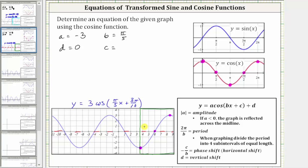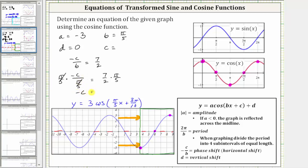Because we start here, the phase shift, or horizontal shift, is now right 3.5 units, or seven halves. Therefore, negative c divided by b must equal positive seven halves. We know b is pi over five, which gives us negative c divided by pi over five equals positive seven halves. Multiplying both sides by pi over five, negative c equals seven pi over ten, and therefore positive c equals negative seven pi over ten.